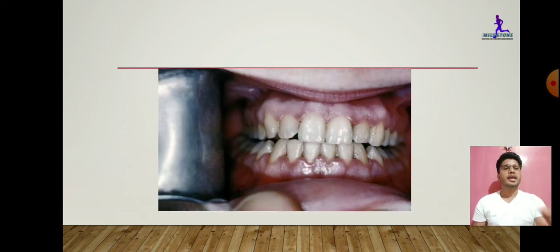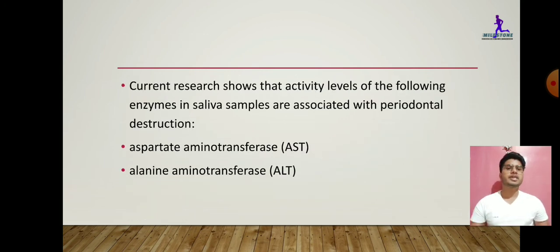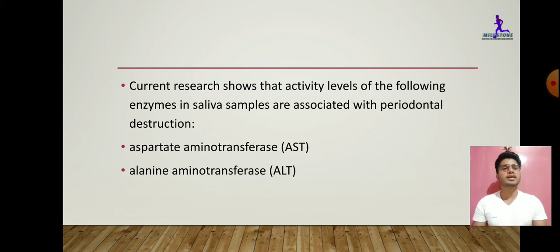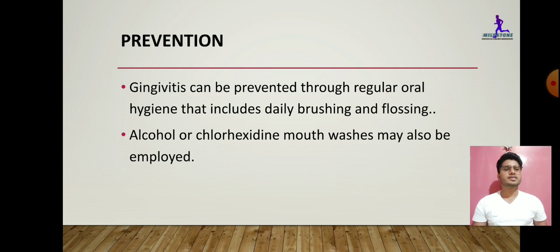An image of ANUG is shown. Diagnosis of gingivitis is done with visual examination, and radiographical examination may also be performed — radiographs are taken to probe the gingiva. Enzyme studies in saliva can also help, similar to cardiac enzyme markers or renal function tests. The salivary enzyme markers for gingivitis include AST, ALT, GGT, ALP, and ACP.